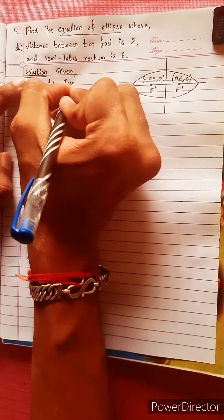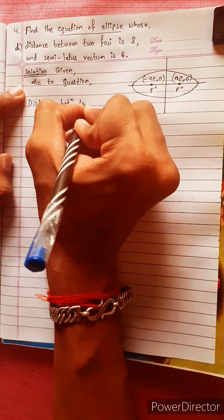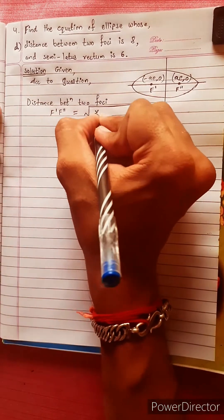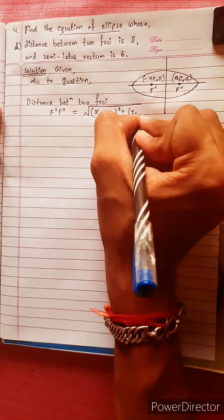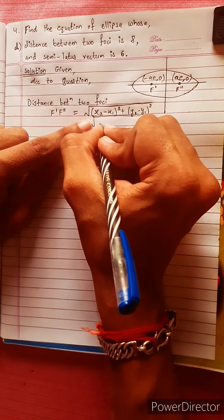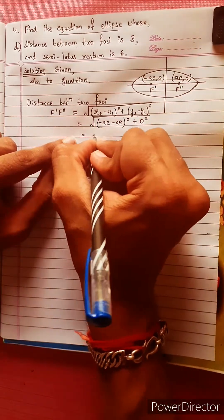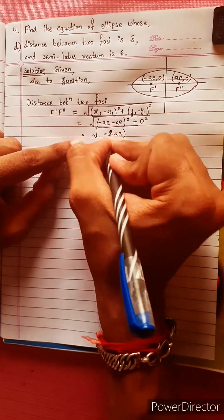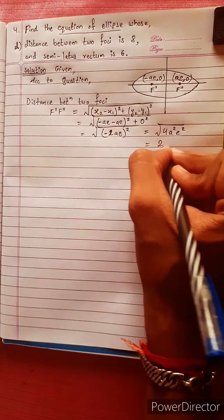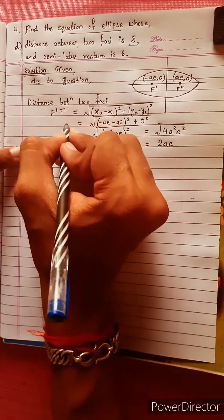According to the question, the distance between two foci F and F' is given by the distance formula: sqrt((x2 - x1)² + (y2 - y1)²). Substituting x1 = ae, x2 = -ae, y1 = y2 = 0, we get sqrt((-ae - ae)²) = sqrt(4a²e²) = 2ae, which equals 8.